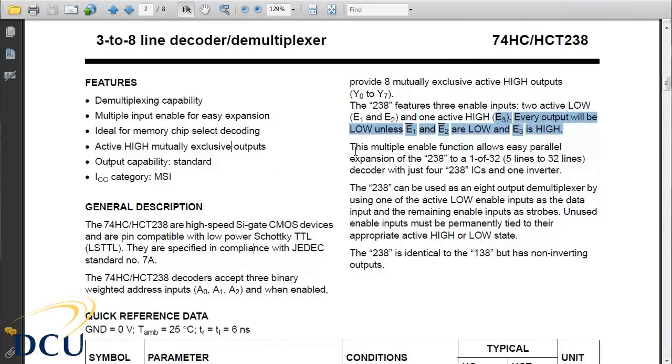This is the data sheet for the 74HC238. It's a three line to eight line decoder typically used for applications such as memory chip select decoding. This decoder takes three weighted address inputs labeled A0, A1 and A2, and provides eight mutually exclusive high outputs Y0 to Y7.